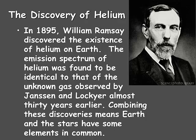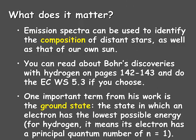When you combine these two discoveries, it tells us that Earth and the stars do have some elements in common. Emission spectra can be used to identify the composition of distant stars as well as that of our own sun. We can't go to distant stars yet, or even our own sun, and collecting a sample would be pretty difficult. But we can tell the composition without having a sample by looking at emission spectra produced as the light from the sun passes through a prism.